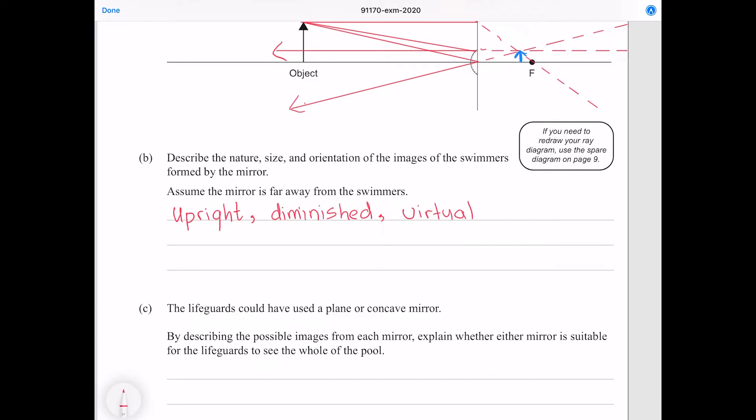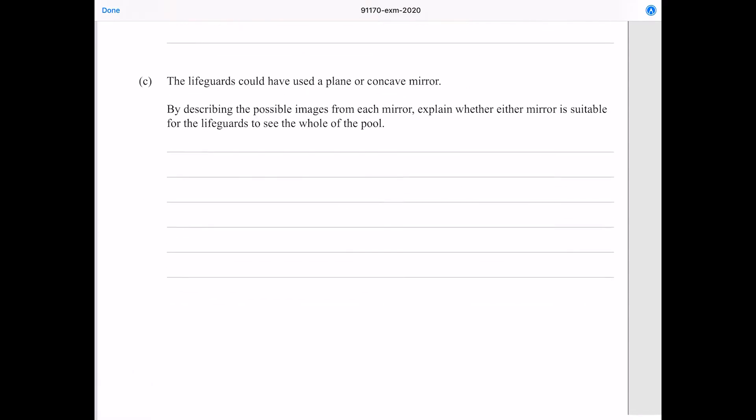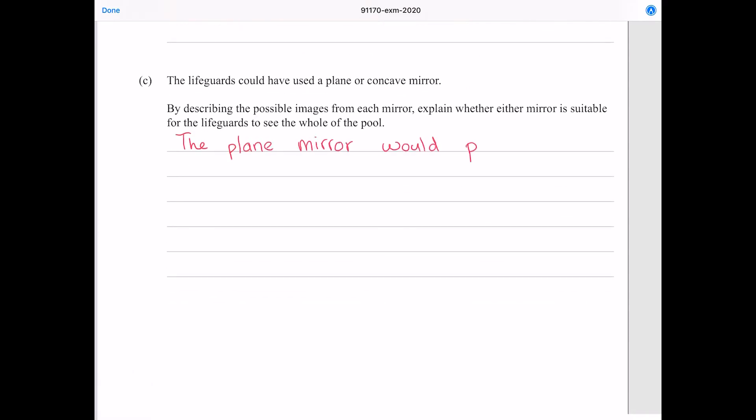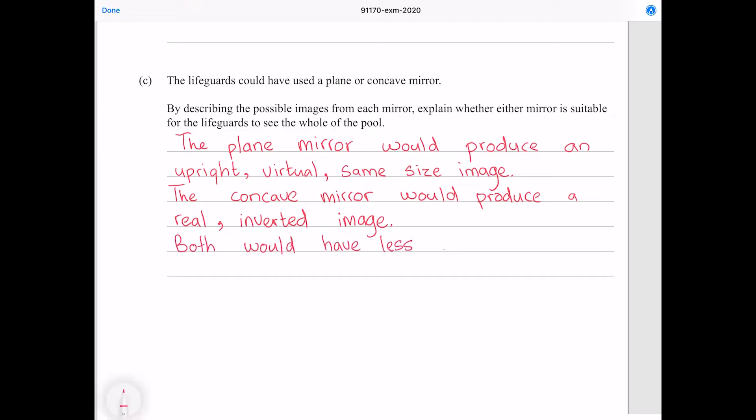So the main point is the field of view, but also with the convex mirror we get an upright image which is handy, which we wouldn't get with the concave mirror. The image from the concave mirror is also going to be real which means we'd need a screen to project it on, so we wouldn't be able to see it in the mirror. The plane mirror would produce an upright virtual same size image. The concave mirror would produce a real inverted image. Both would have less field of view than the convex mirror, so would not display as much of the pool.